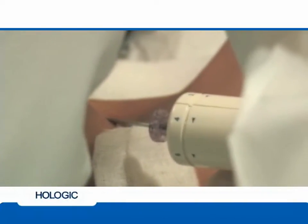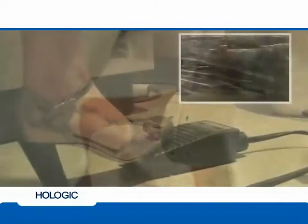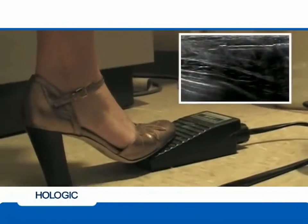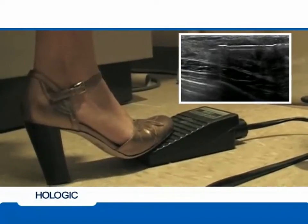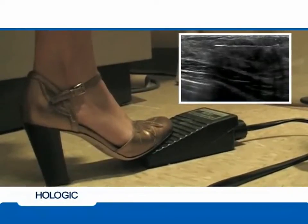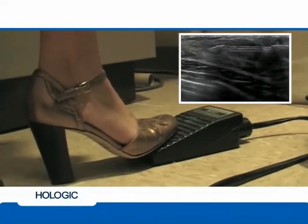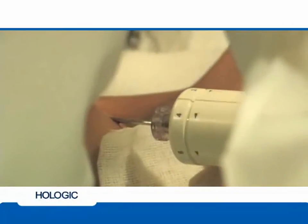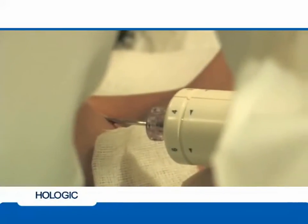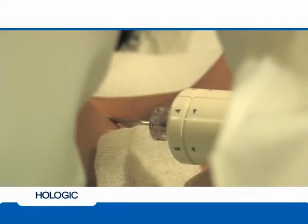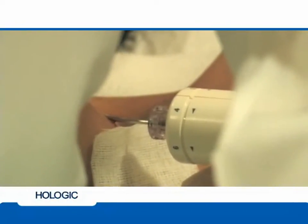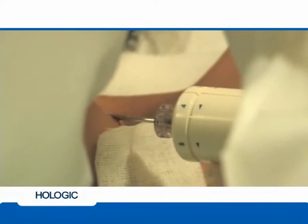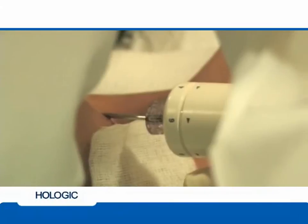When satisfied with your needle position, begin taking tissue samples by depressing the foot pedal that will activate the cutting cycle. It will take six seconds for the initial vacuum to build before the system will start sampling.